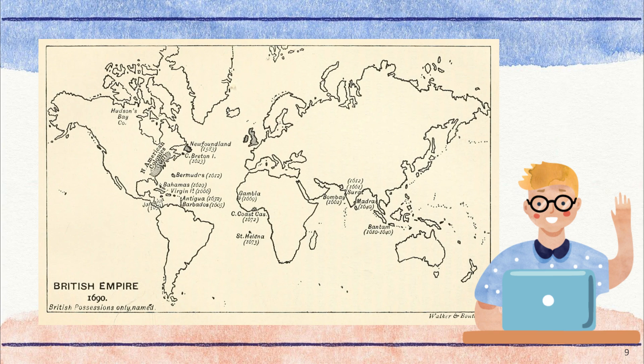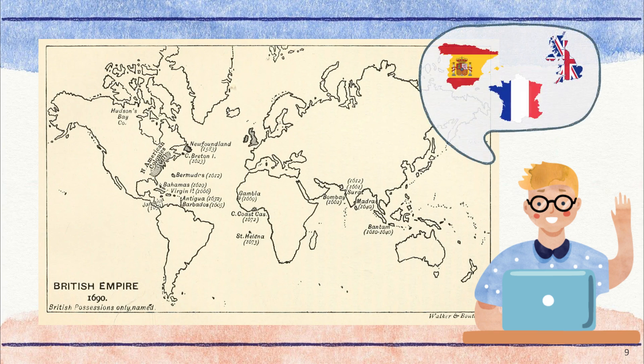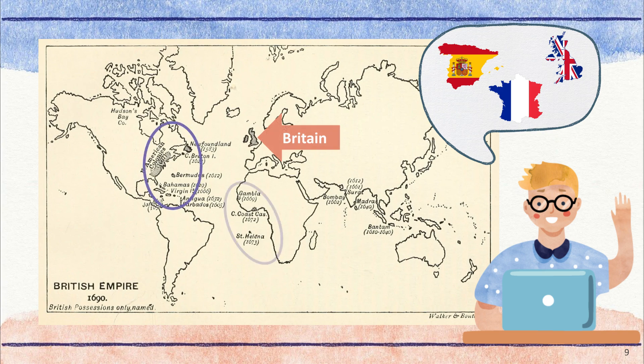It seems incredible that three tiny countries — Spain, France, and Britain — could control such huge colonies all the way across the ocean. But at this time in history, these three nations were some of the most powerful countries in the world with colonies across the globe. For example, the tiny island of Britain controlled parts of North America, Africa, and India. Not only that, but these three countries were constantly fighting wars trying to take over each other's colonies in order to gain more wealth and power.